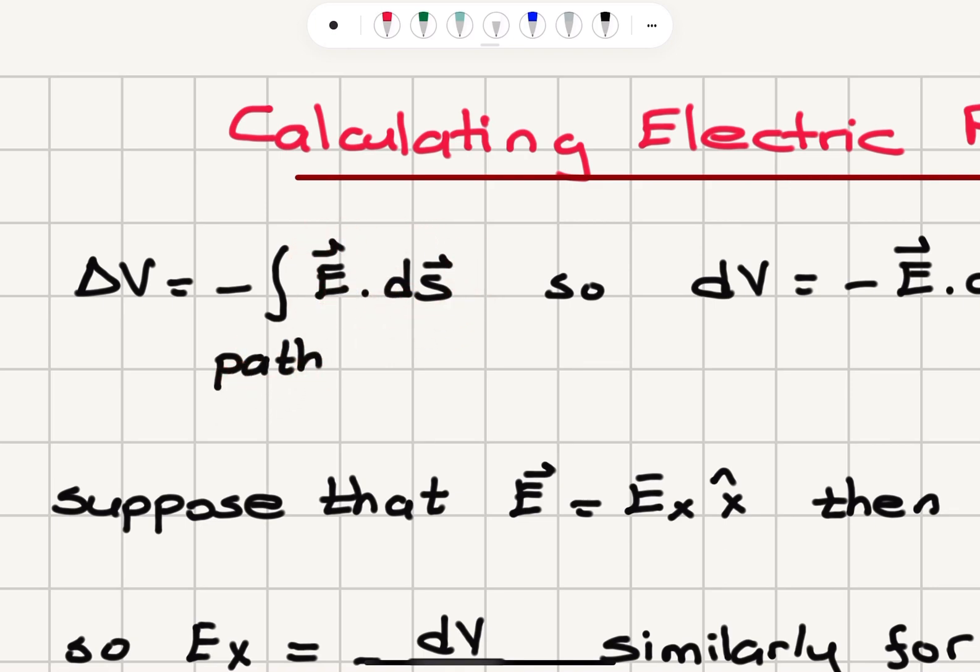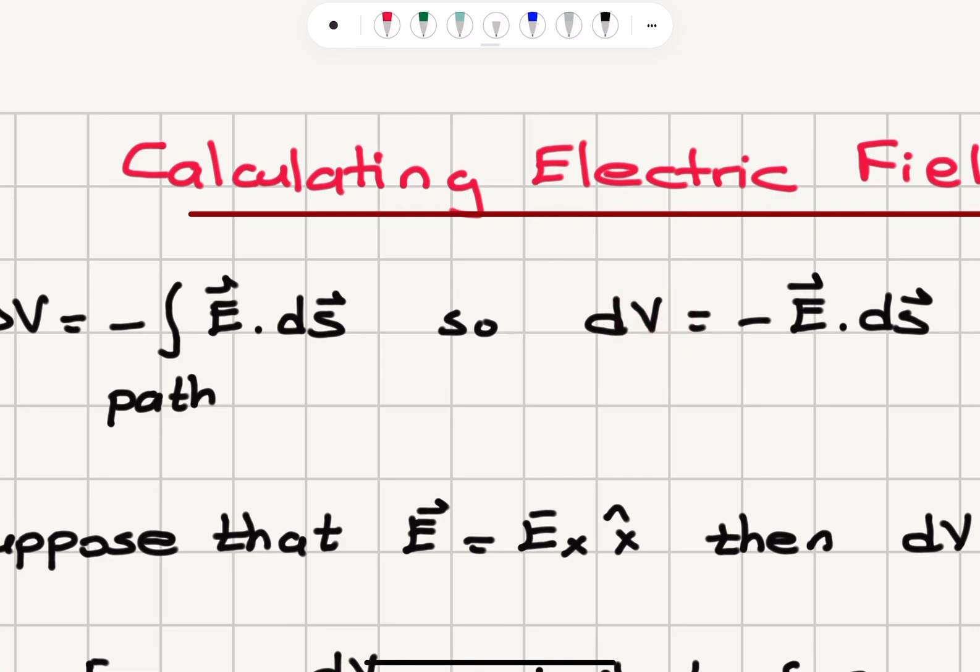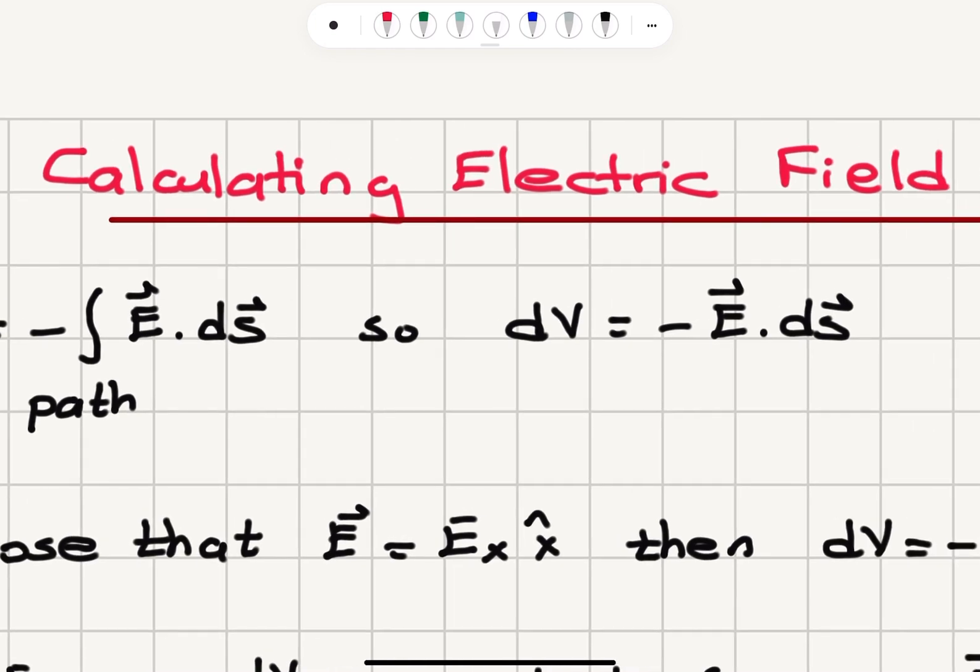So ds is our incremental displacement vector. If I take this integral and differentiate both sides, I have dV, incremental change in potential, is equal to minus E dot ds.